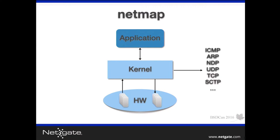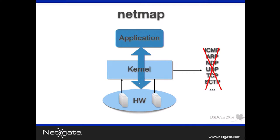What happens when you run NetMap is that you bypass the kernel completely, which gives you speed, but on the other hand you lose all the implementations you have in the kernel. So basically speaking, you are at layer 1 and you have to do all of that yourself. But that is not completely true — we will talk about that later and show how we worked around this.